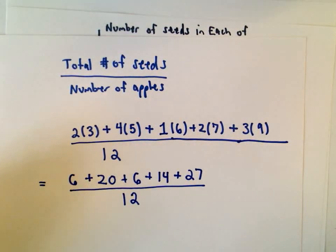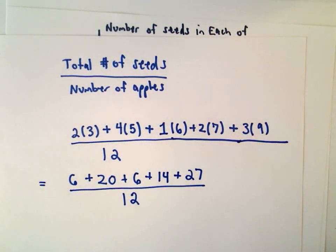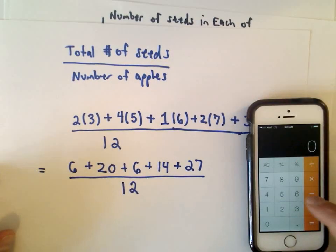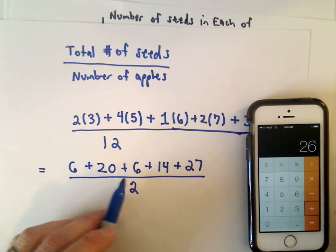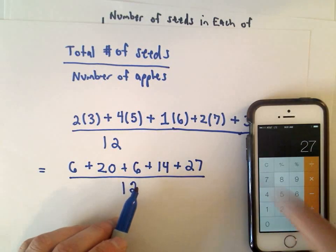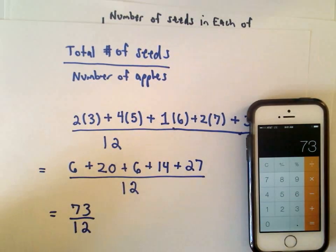Okay, so again, however you want to do this, if you want to do it by hand, go for it. I'm going to go ahead and just use my calculator here. So six plus twenty plus six plus fourteen plus twenty-seven equals, so that's seventy-three on top, divided by twelve.